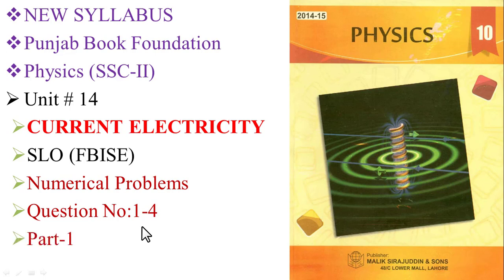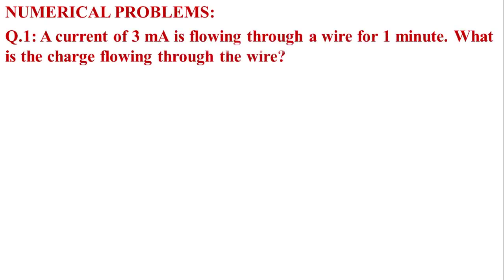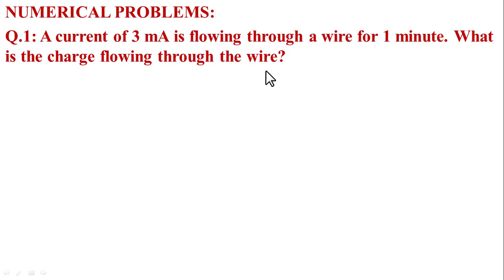The remaining questions will be covered in the next part, Inshallah. Now let's start today's lesson — Numerical Problems, Question No. 1. Given statement: A current of 3 mA is flowing through a wire for 1 minute. What is the charge flowing through the wire?